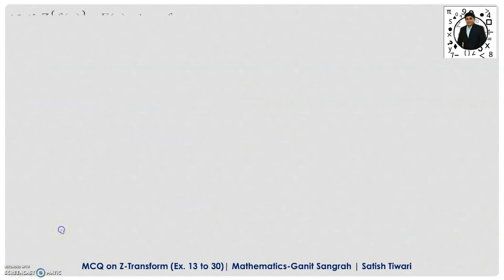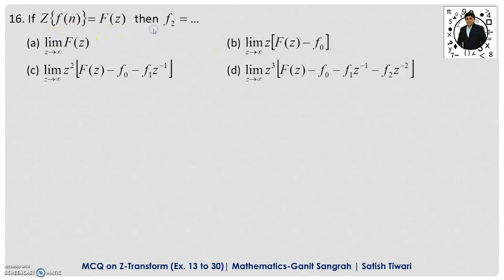Example 16: If Z-transformation of f(n) equals F(z), then f(2) is given by — this is exactly the same formula we just solved. f(2) = limit z→∞ of z²·[F(z) − f(0) − f(1)·z⁻¹]. You must remember these formulas to extract sequence terms f(0), f(1), f(2), f(3). Option C is correct here.